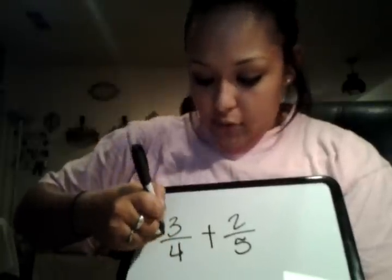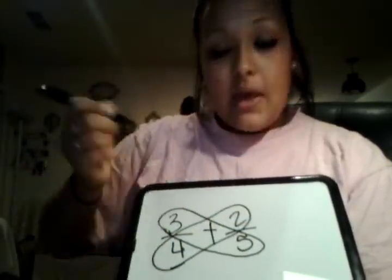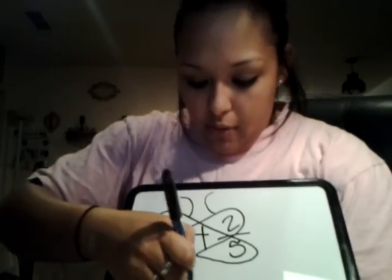For another example, we're going to do a much bigger number where we have to make it into a whole number and have leftovers. So we're going to do 3 fourths plus 2 fifths. Again we're going to cross multiply, so we draw our wings, then the other one, then the antennas — one that way, one that way — and then the bottom part.